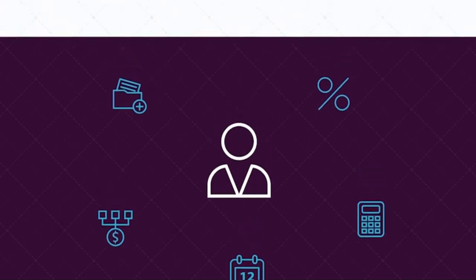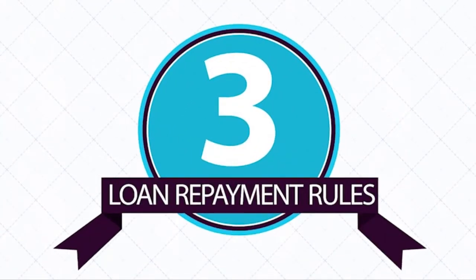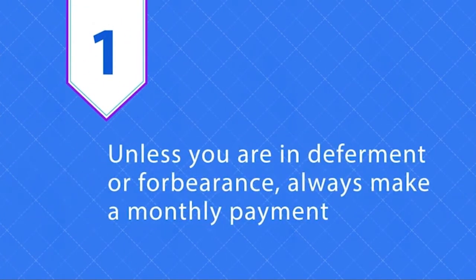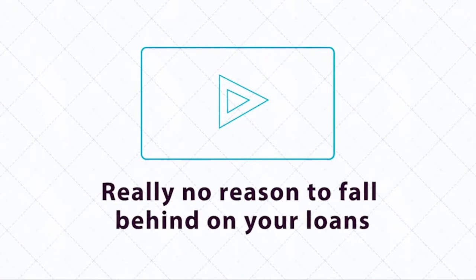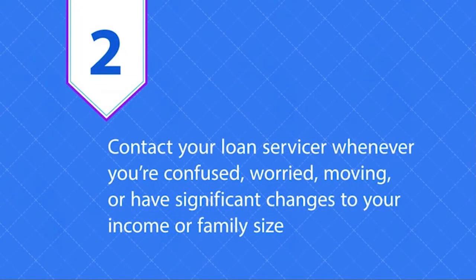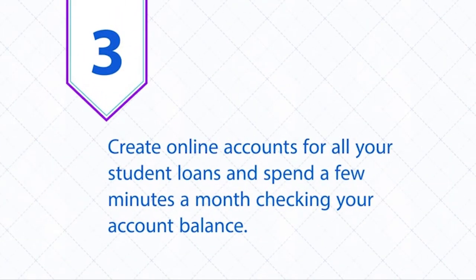With these five steps in mind, there are three student loan repayment rules that you should live by. Number one: unless you are in deferment or forbearance, always make a monthly payment. With the loan repayment options that we'll introduce in the next video, there is really no reason to fall behind on your loans. Number two: contact your loan servicer whenever you're confused, worried, moving, or have significant changes to your income or family size — they have good advice to help you manage repayment. Number three: create online accounts for all your student loans and spend a few minutes a month checking your account balance.